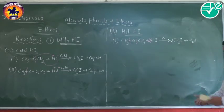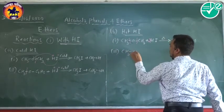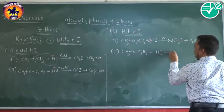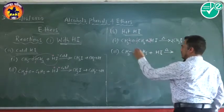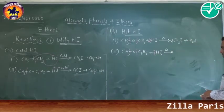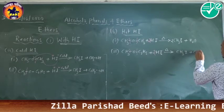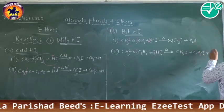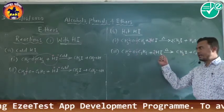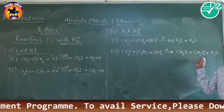With the mixed ether reacting with hot HI, both cleavages take place. Two molecules of hydriodic acid react to form methyl iodide and ethyl iodide along with H2O. In short, a mixed ether reacting with hot hydriodic acid gives two different alkyl iodides.